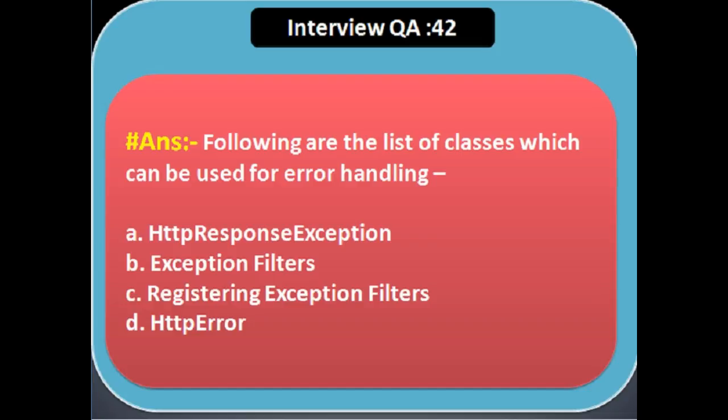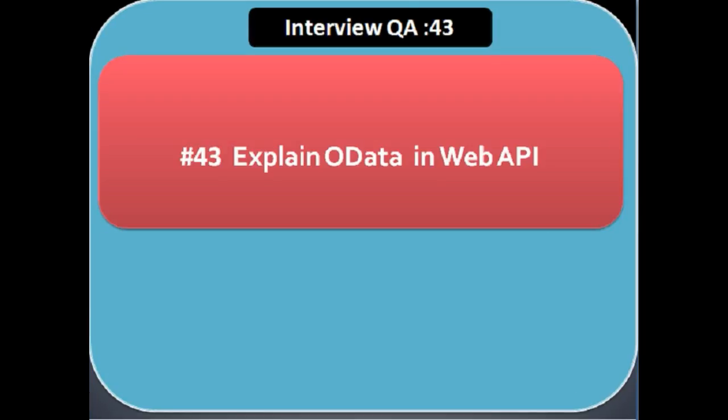Next question: how can we handle errors in Web API? The classes that can be used for handling errors are: HttpResponseException, exception filters, registering exception filters, and HttpError. Next question: explain OData in Web API.